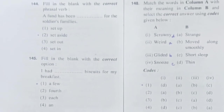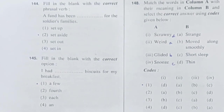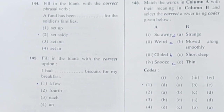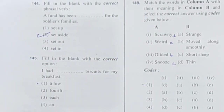Question 144: Fill in the blank with the correct phrasal verb. A fund has been ___ for the soldiers' families. Options: set up, set aside, set out, set in. The fund has been kept separately for the soldiers' families, so the answer is 'set aside.' A fund has been set aside for the soldiers' families. Option 2 is correct.